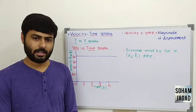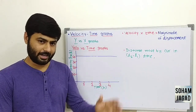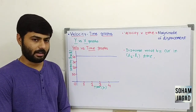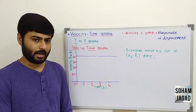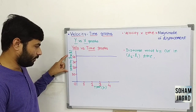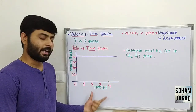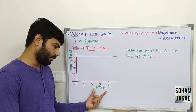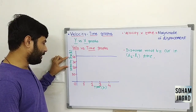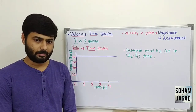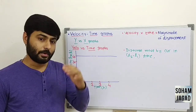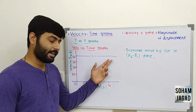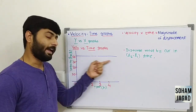The variation in the velocity of an object moving on a straight line with time can be represented by a velocity-time graph. In the velocity-time graph, we write velocity on the y-axis and time on the x-axis in the required units — here we take hours for time and kilometers per hour for velocity. If an object moves with uniform velocity, then the graph of velocity versus time will be a straight line parallel to the x-axis.